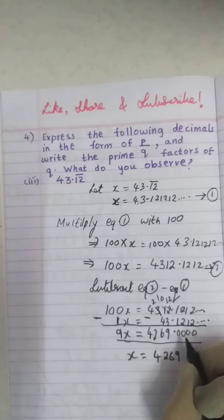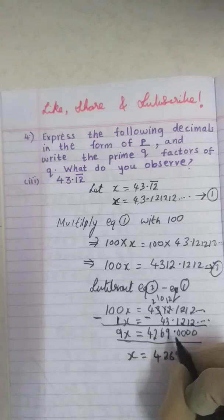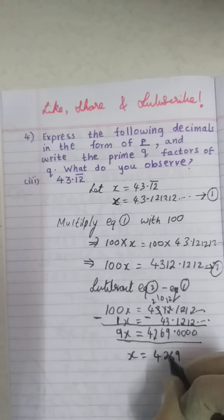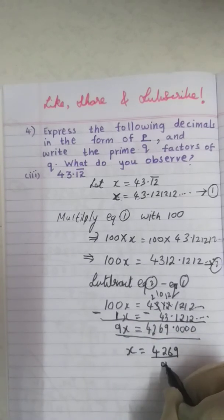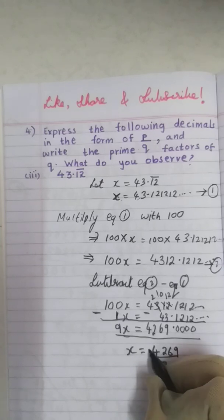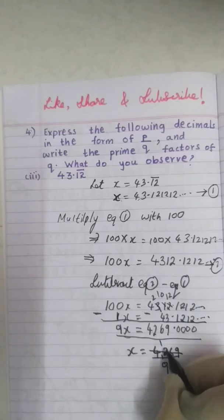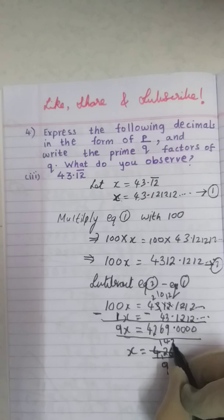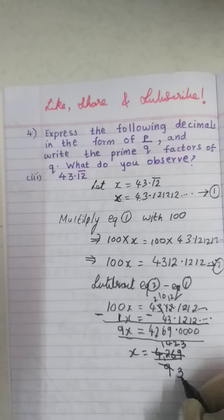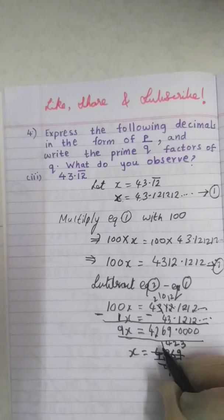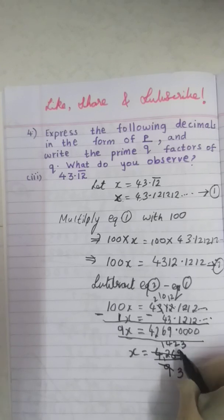So now x will be equal to 4269. 0.00 means we know that after 0.0 has no value. So 4269.00 is nothing but 4269 only. Now into 99 if it goes outside becomes divided by. Now these both will go in 3 table. 3 x 1 is 3, 1, 2. 3 x 4 is 12. 3 x 2 is 6. 3 x 3 is 9.